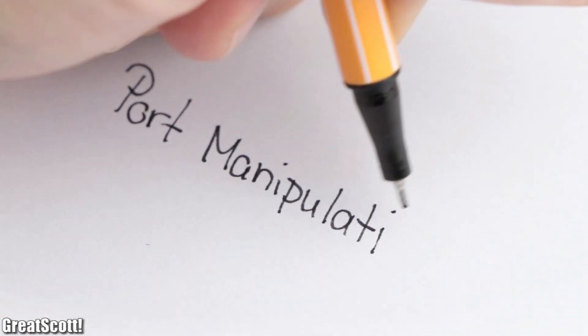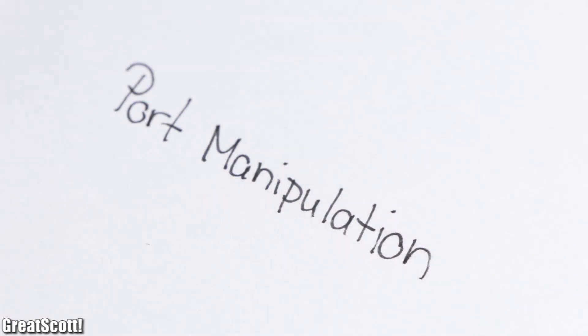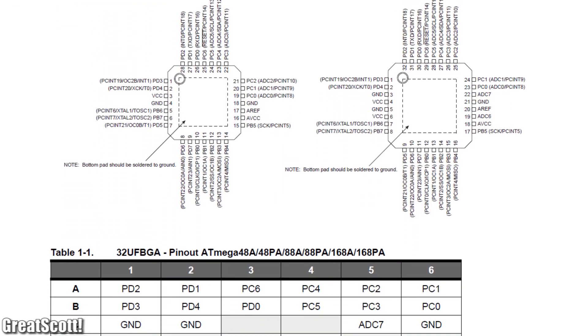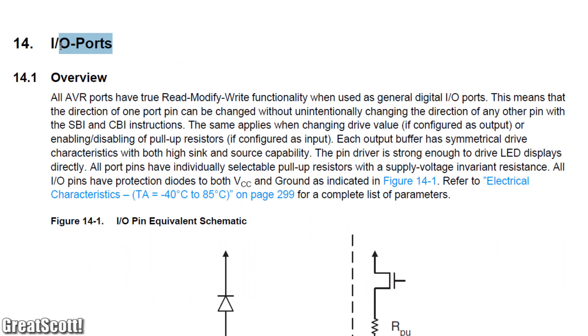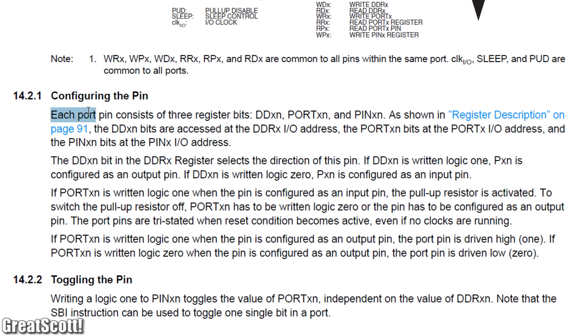But to understand the port manipulation that I used we have to take a closer look at the datasheet of the ATmega328p. There we can find the IO ports section that tells us that each port pin consists of three register bits: